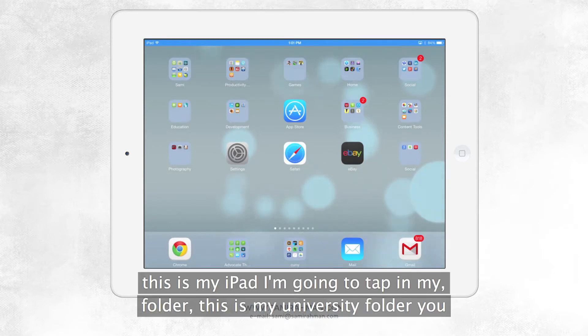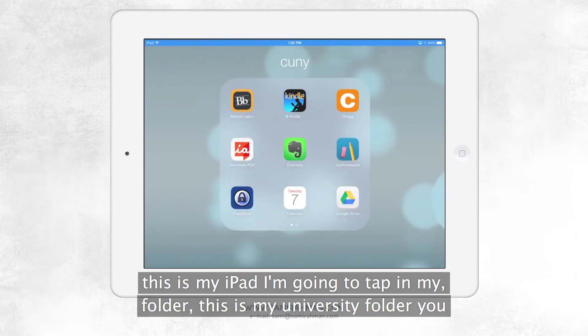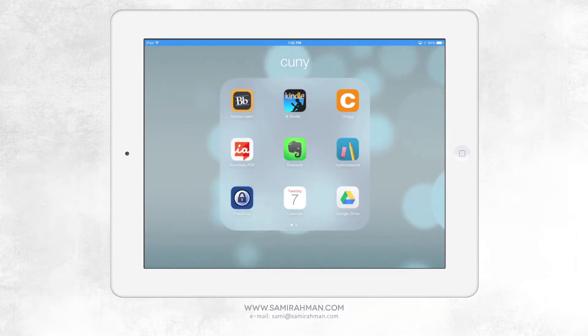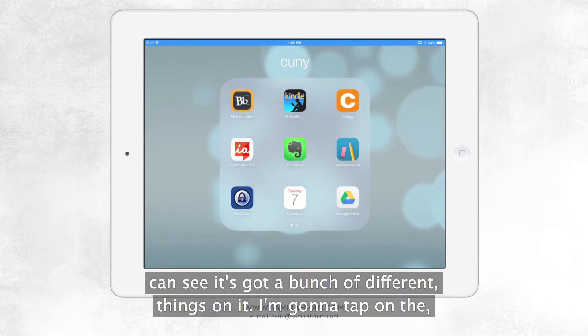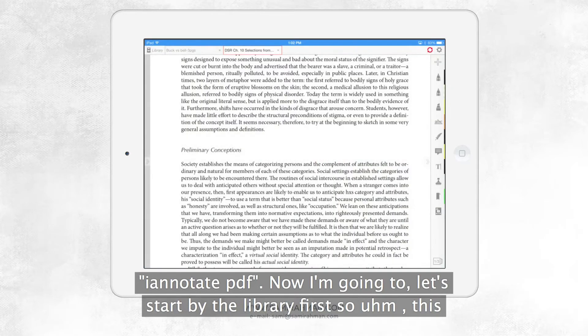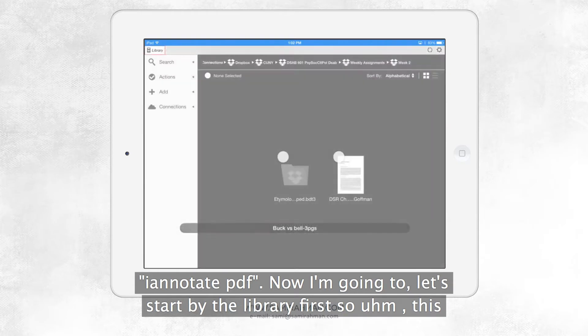So this is my iPad. I'm going to tap on my folder, this is my university folder. You can see it's got a bunch of different things on it. I'm going to tap on the iAnnotate PDF. Now, let's start by the library first.